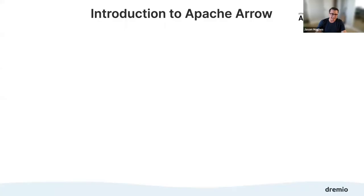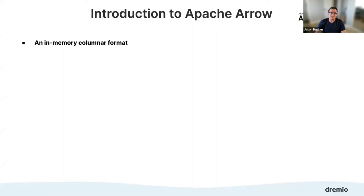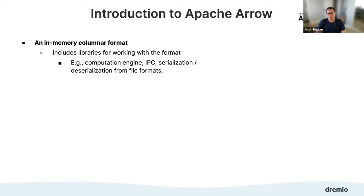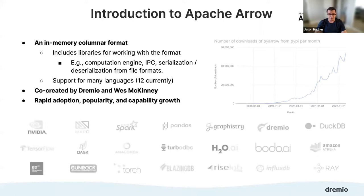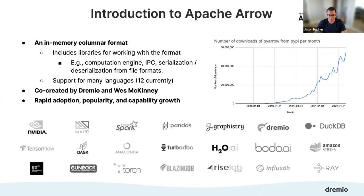Before going on to Arrow Flight, let's quickly recap Apache Arrow. It's an in-memory columnar format that includes libraries for working with that format. It's a polyglot format supporting 12 languages currently. It was co-created by Dremio and Wes McKinney — it was actually Dremio's internal memory format originally. There's been crazy rapid adoption, popularity, and capability growth, not to mention integration with many tools. The exponential growth of usage has been remarkable, and the list of well-known projects that support it is extensive.